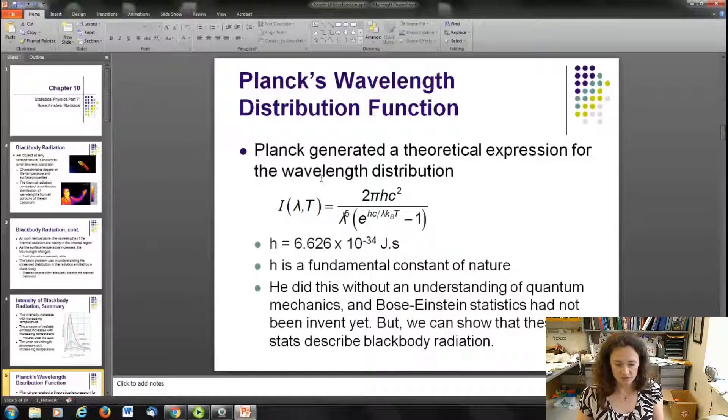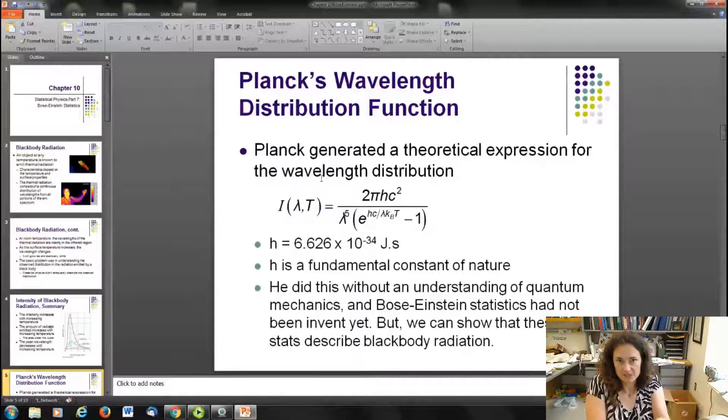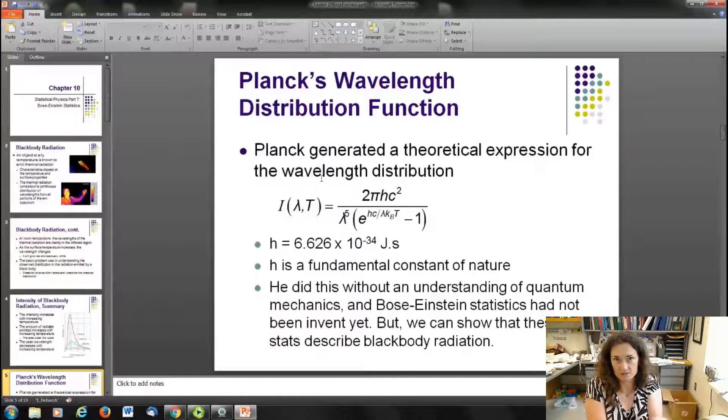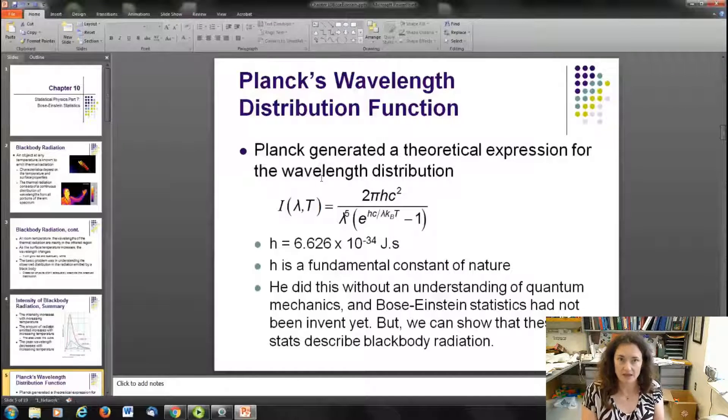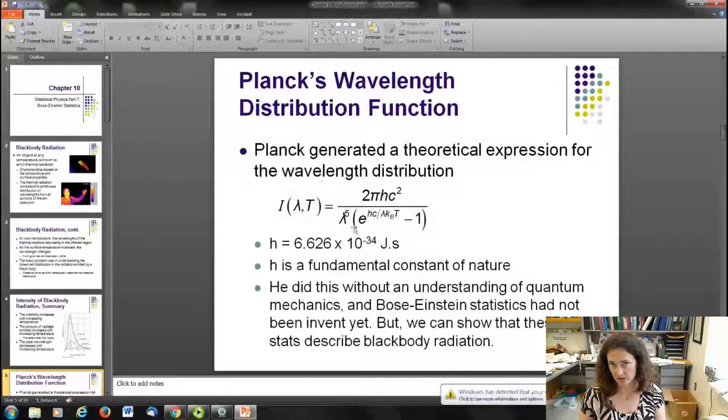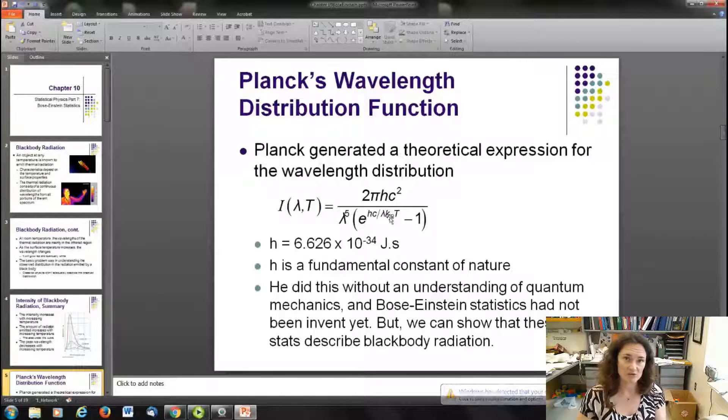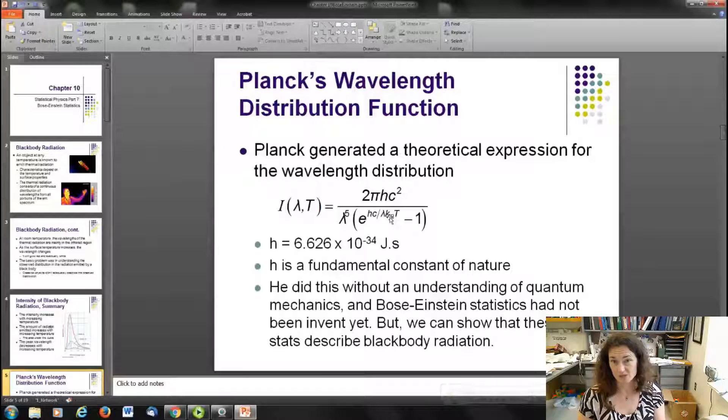To describe the theory, he had to assume that a solid was a collection of atoms connected to one another by these little springs, and the springs only vibrated at very specific quantized frequencies. So this was a new idea and helped lead us into the quantum mechanics that we know and love today. But it's worth emphasizing that Planck derived this expression for a black body radiators intensity curve without knowing anything about quantum mechanics or knowing anything about Bose-Einstein statistics, which weren't developed until much later.